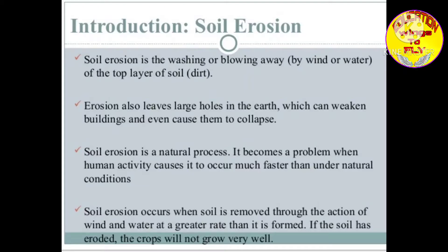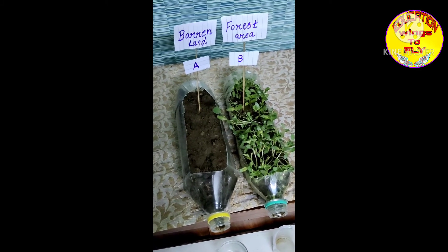So it is very important for us to stop soil erosion. Soil erosion is basically a natural process, but it becomes a problem when human activity causes it to occur much faster than under natural conditions. We are going to perform one activity to see how we can prevent soil erosion by planting more trees.